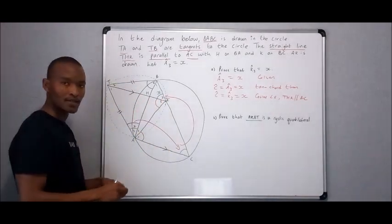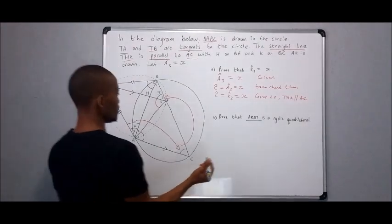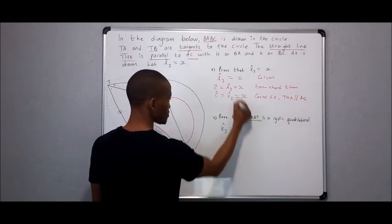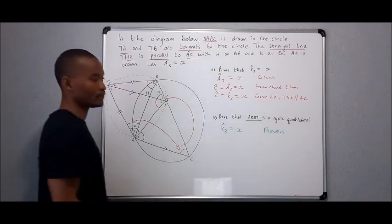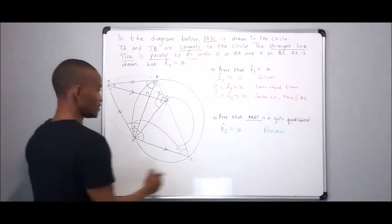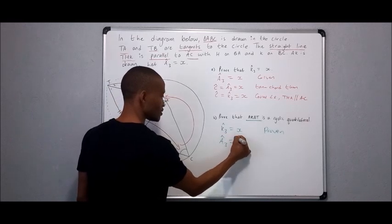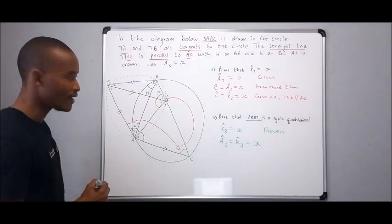So we know that angle K3 is equal to x, and this was proven in the previous question. And therefore, angle A3 is equal to angle K3, they're both equal to x.